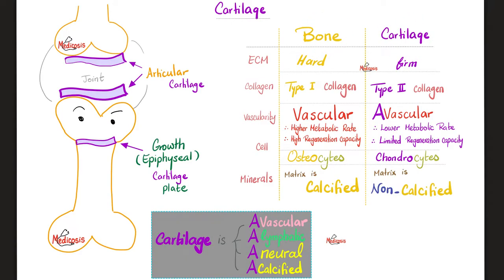Cartilage is not the same as bone. Cartilage is firm, not hard. Cartilage mostly has type 2 collagen, as well as type 5, type 6, etc. Cartilage has no vessels — not just no blood vessels, but no blood vessels, no lymph vessels, no nerves, and no calcification under normal circumstances.